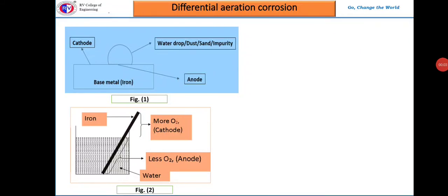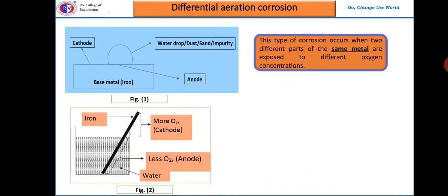Differential aeration corrosion occurs when a single metal is exposed to different oxygen concentrations. Consider a water drop, dust, or sand particle settling on a base metal like iron. The area below the dust particle, having less oxygen concentration, acts as the anode, whereas the area not covered by the dust particle, having more oxygen concentration, acts as the cathode.